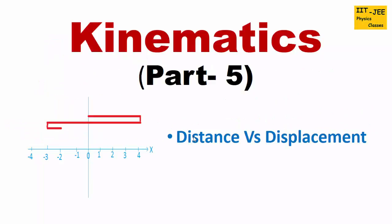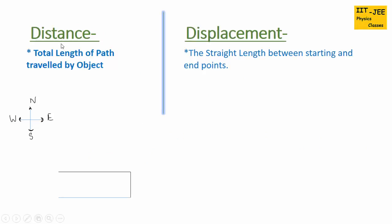Hello friends, in this video we will discuss distance and displacement and the difference between them. Please make sure you watch kinematics part 1 to part 4 — the link is given below in the description box. Distance is the total length of path traveled by the object, and displacement is the straight length between the starting and end points.